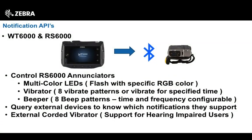The notification API for the EMDK is designed to allow you to control the enunciators on a remote device. For instance, the RS6000 allows you to control multi-color LEDs, specifying an RGB color and flashing that LED on and off. You can also control haptic feedback on the ring scanner by controlling its vibrator motor — you can specify up to eight different vibrate patterns or have it vibrate for a specific amount of time. You can also control the device's beeper and define up to eight beat patterns.